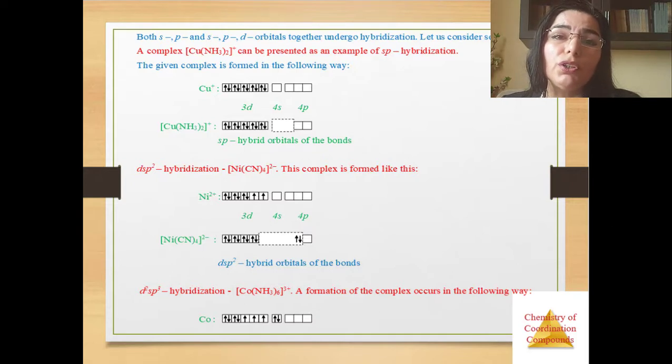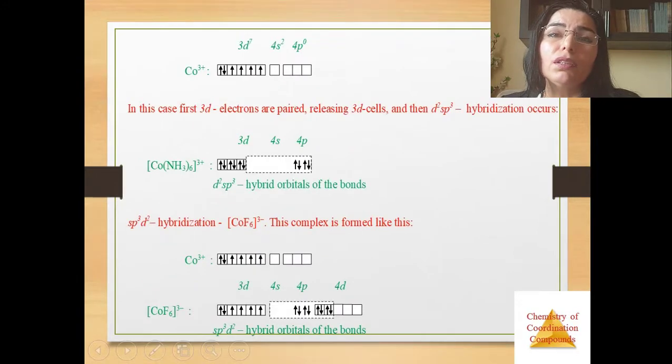Then you see here D2SP3 hybridization. An example: a formation of the complex occurs in the following way, like this. Then in this case, first 3d electrons are paired and localized in 3d cells, and then D2SP3 hybridization occurs like this.